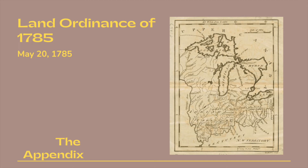And the Geographer shall make returns, from time to time, of every seven ranges, as they may be surveyed. The Secretary of War shall have recourse thereto, and shall take by lot therefrom a number of the townships, as will be required, to one-seventh part of the whole of such seven ranges, for the use of the late Continental Army.